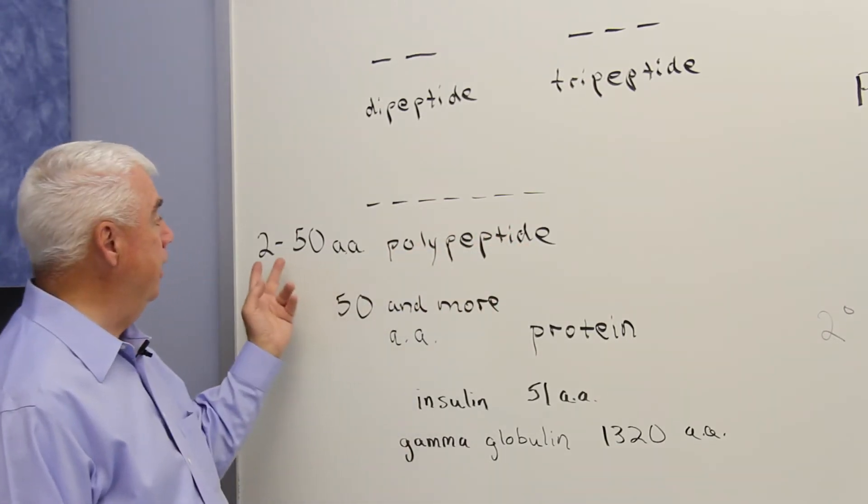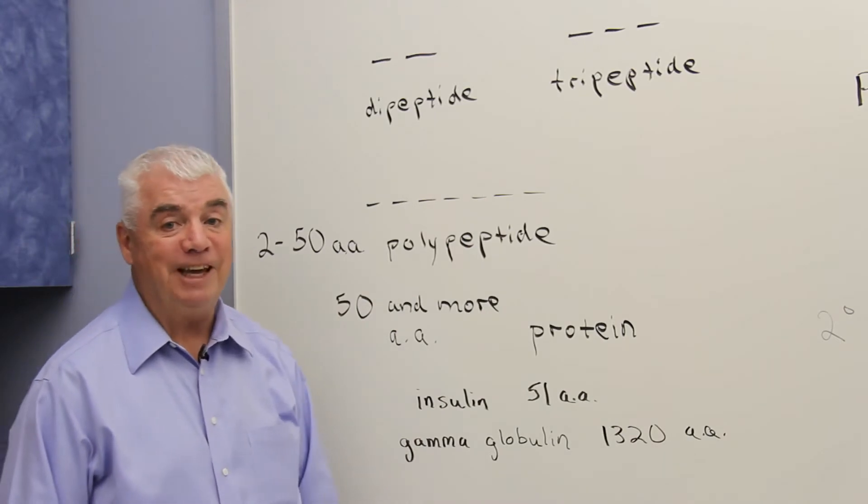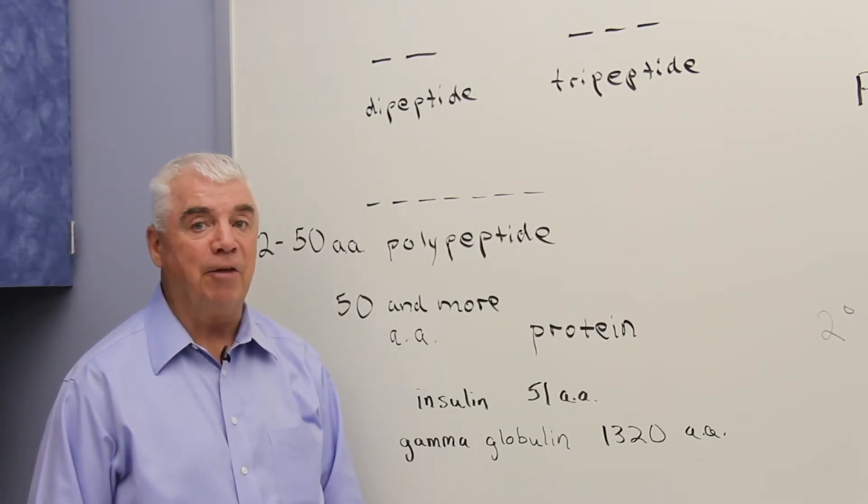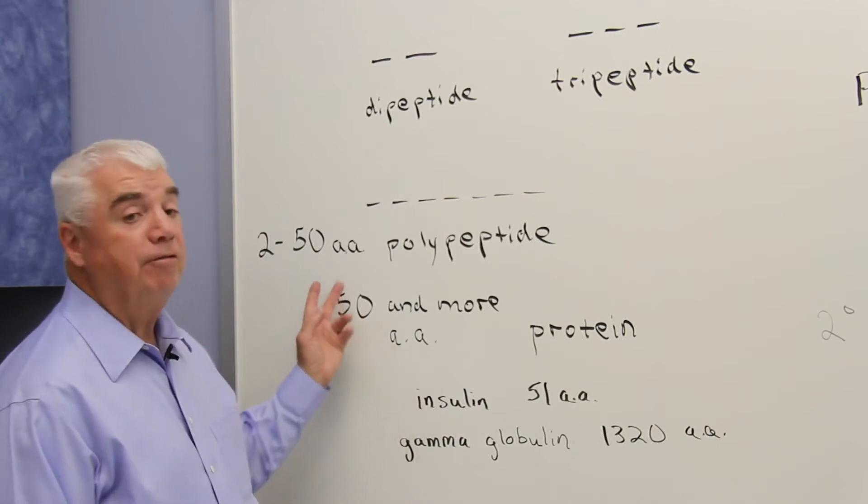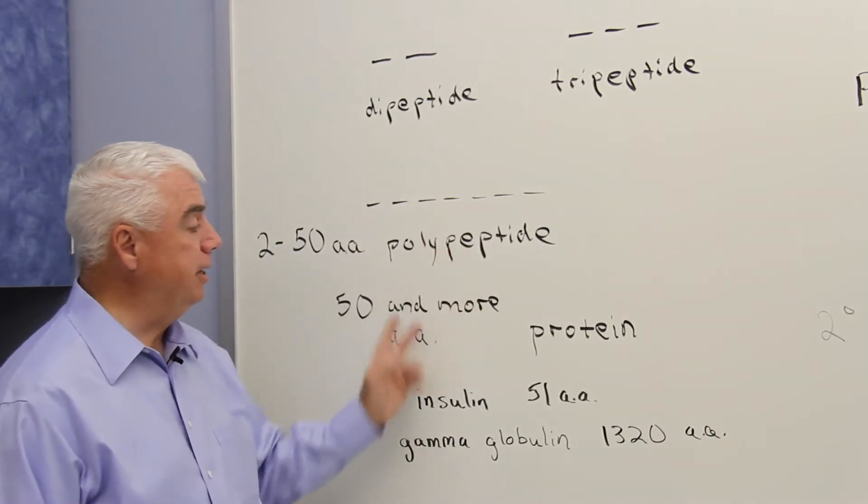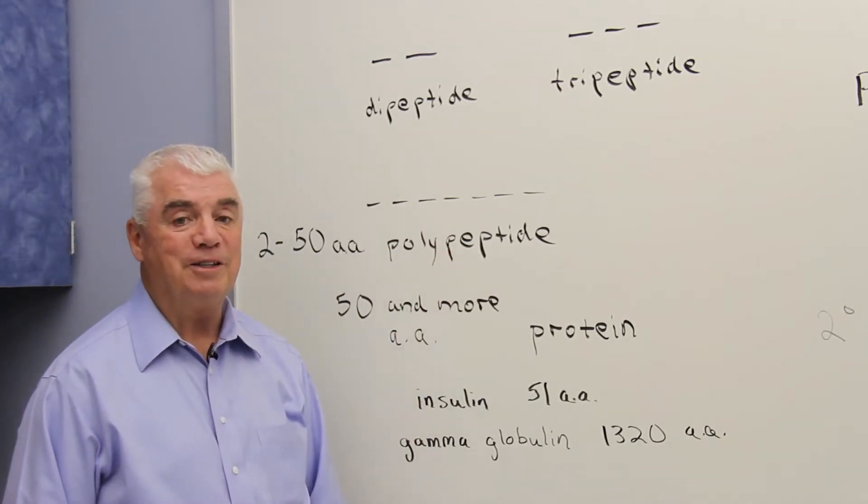And rather arbitrarily, if there are two to 50 amino acids linked together, we call that a polypeptide. If the chain is longer, 50 and more, we refer to it as a protein.